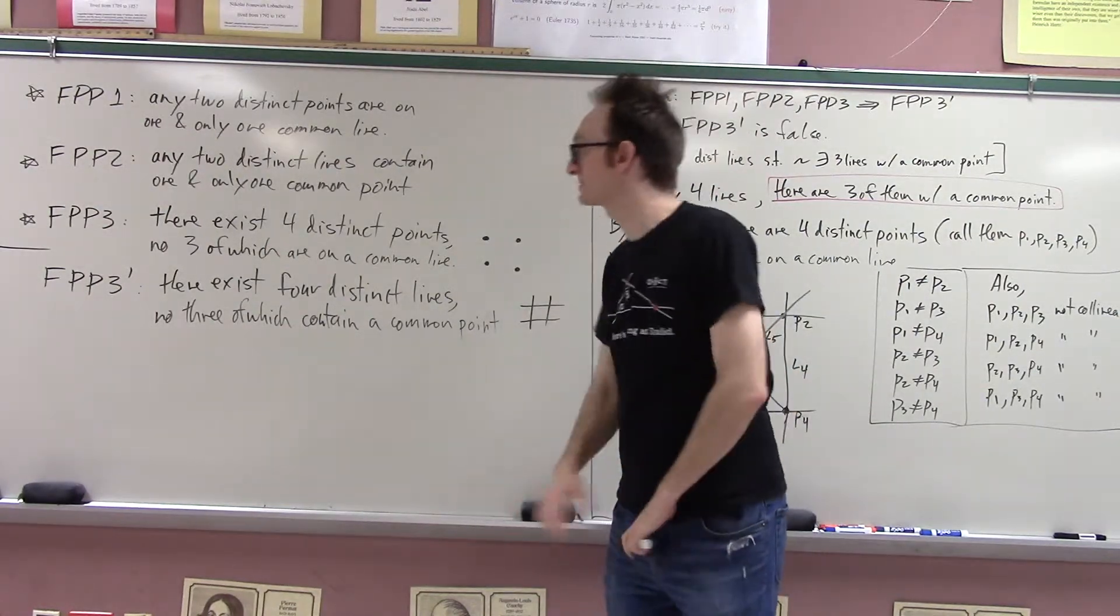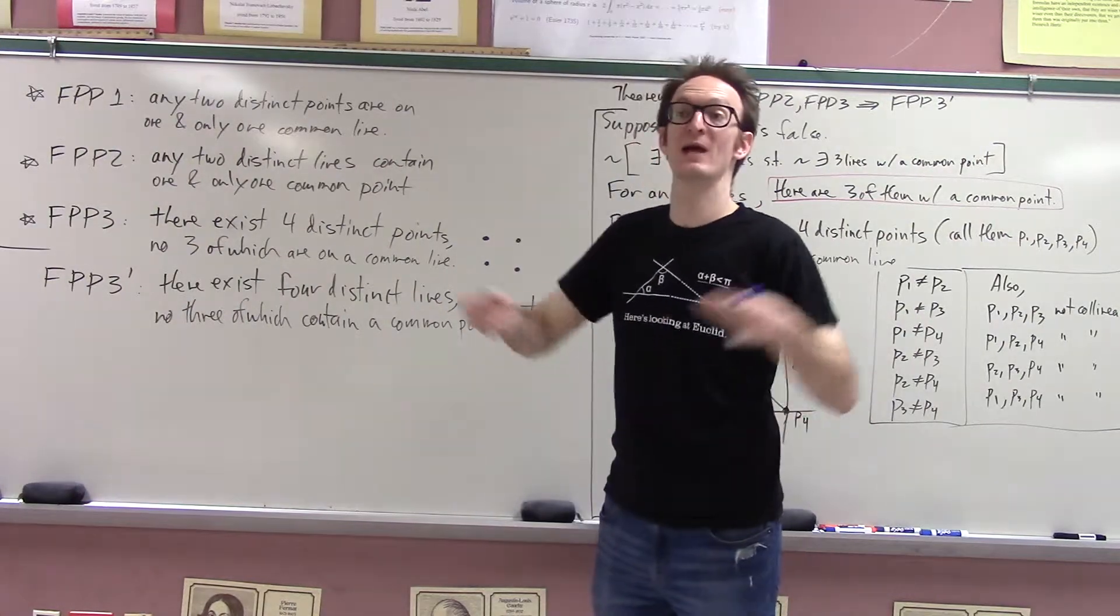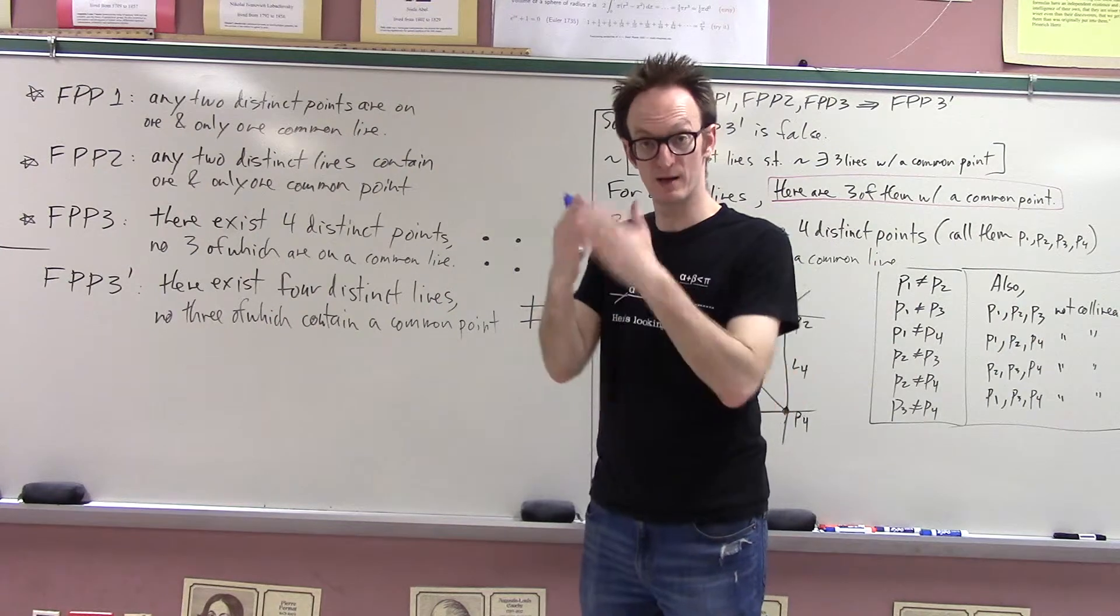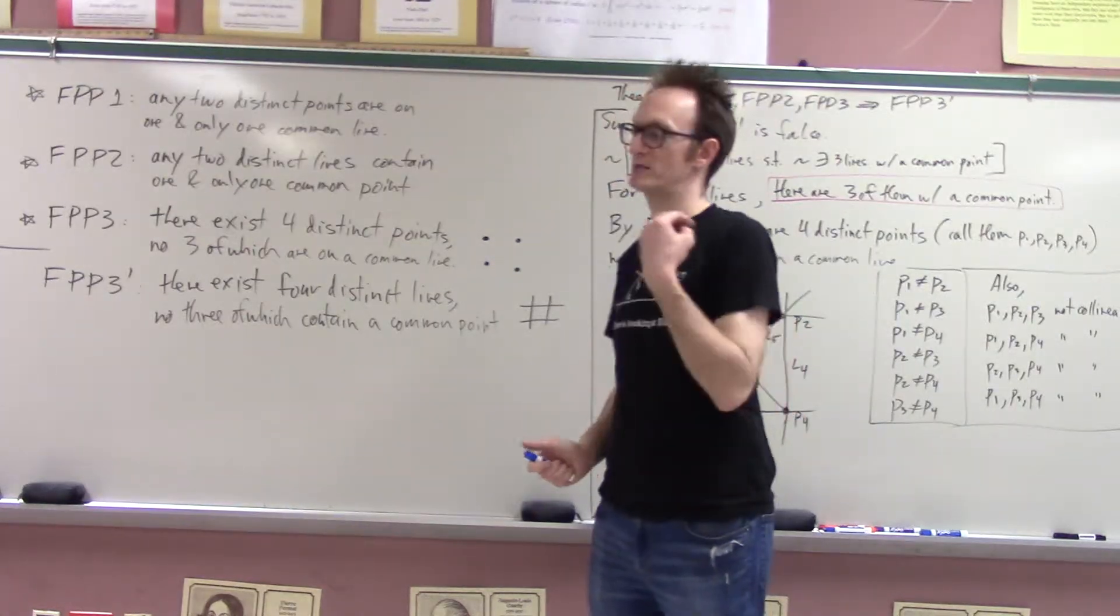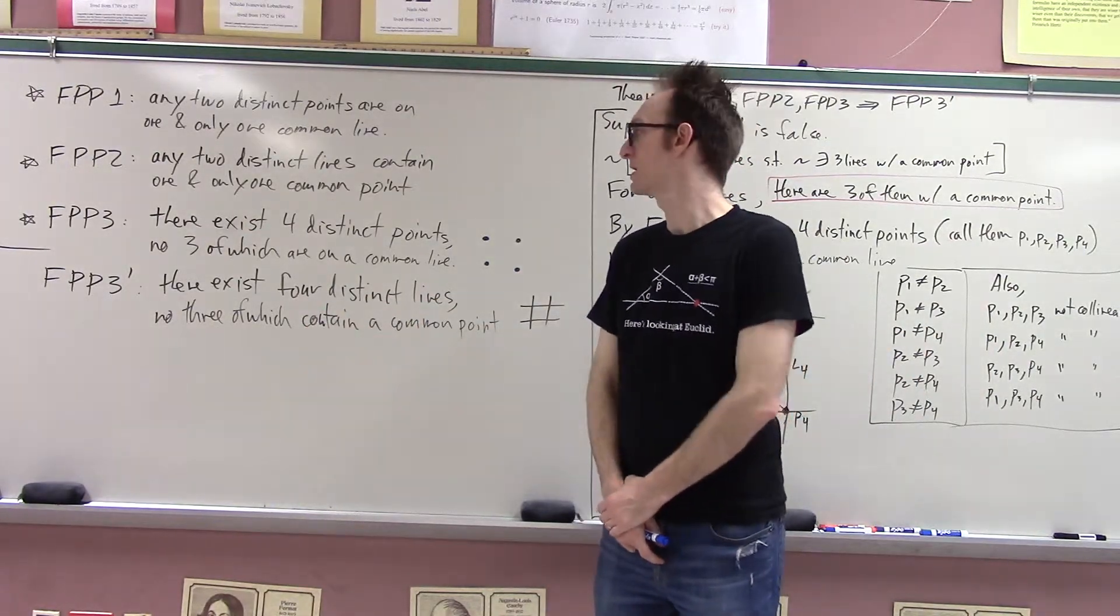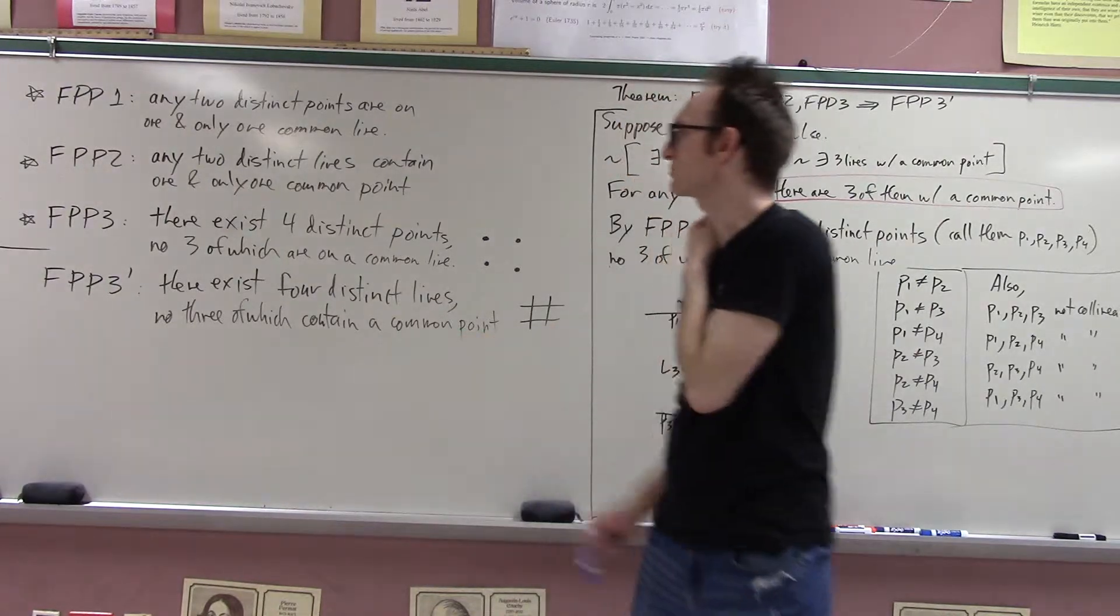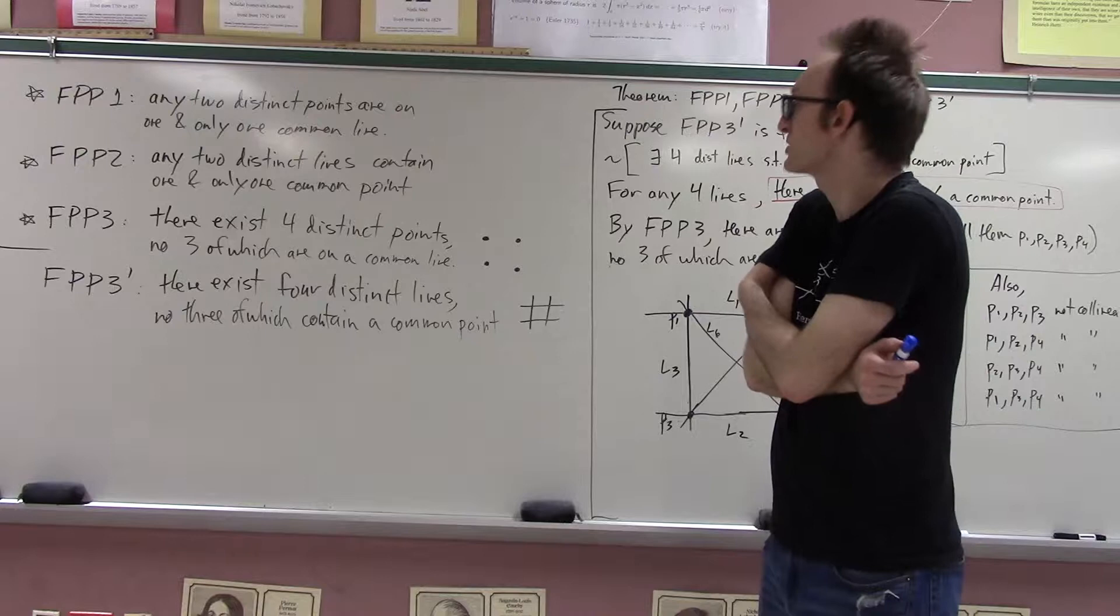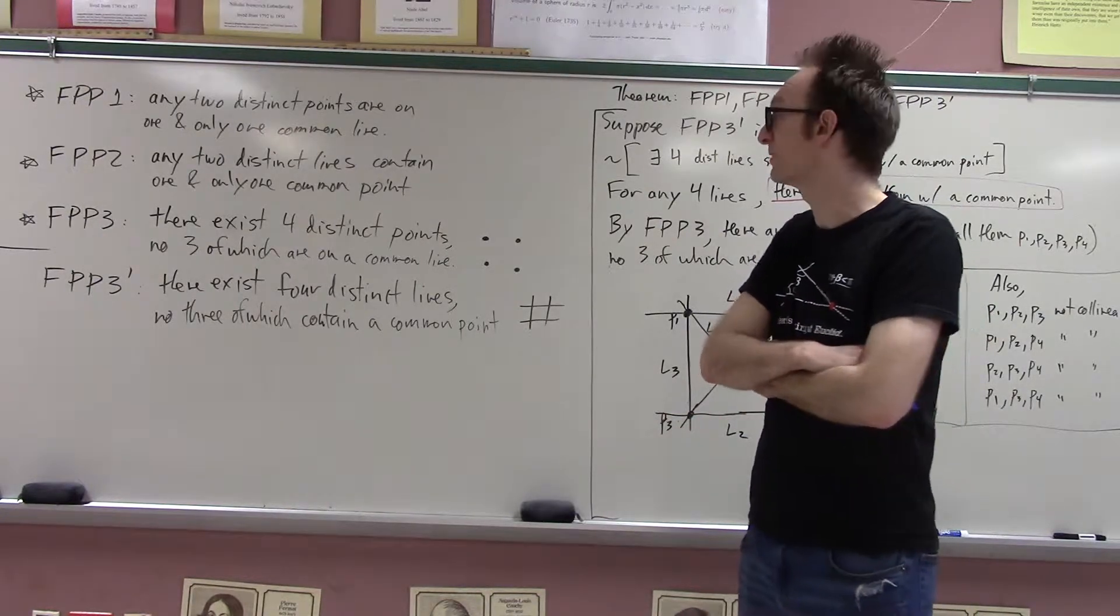The value of FPP1 is that if you have two points you can by FPP1 create the line through them. FPP2 says if you have two lines, it must exist a point that those two lines share. But for the purposes of doing proofs, FPP1 and FPP2 aren't as powerful as FPP3. FPP3 is the one that sort of seeds your model with some objects - these special four distinct points, these core four, no three of which are on a common line. We set out to prove that there exist four distinct lines no three of which contain a common point.